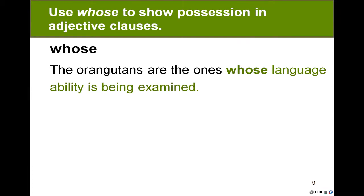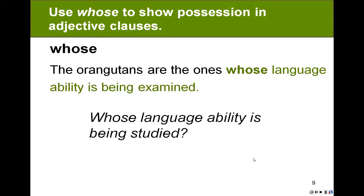The orangutans are the ones whose language ability is being examined. Whose always comes before a noun. If you see a noun such as language, you know it's going to be whose. Whose language ability is being studied. The orangutans.